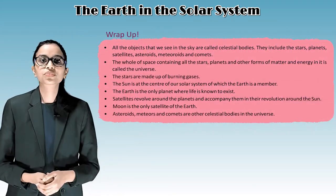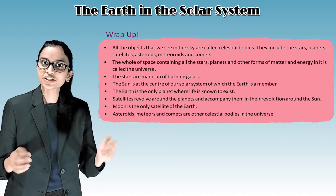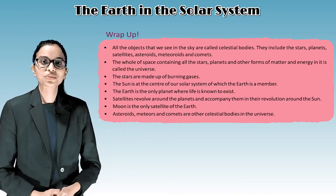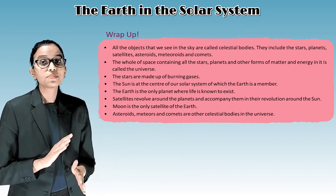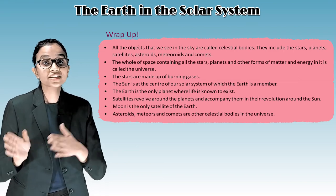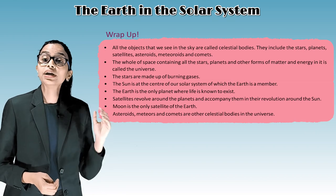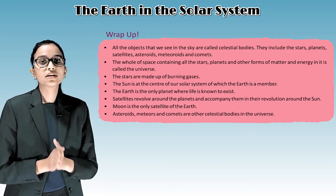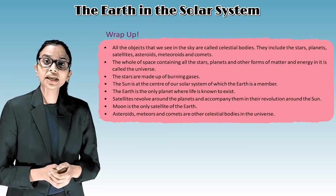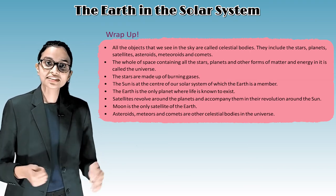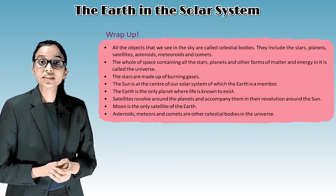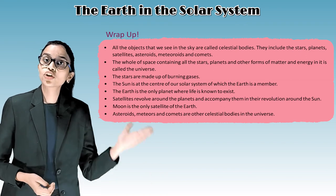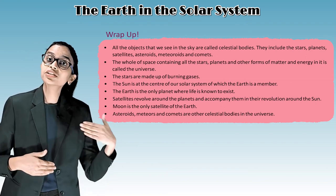It's time to wrap up. All the objects that we see in the sky are called celestial bodies. They include the stars, planets, satellites, asteroids, meteoroids and comets. The whole of space containing all the stars, planets and other forms of matter and energy in it is called the universe. The stars are made up of burning gases. The sun is at the center of our solar system of which the Earth is a member. The Earth is the only planet where life is known to exist. Satellites revolve around the planets and accompany them in their revolution around the sun. Moon is the only satellite of the Earth. Asteroids, meteors and comets are other celestial bodies in the universe.